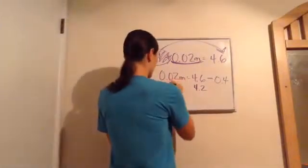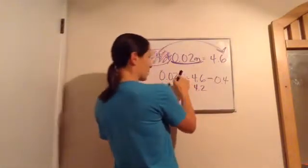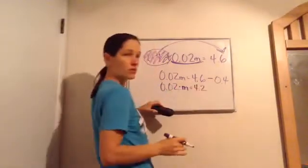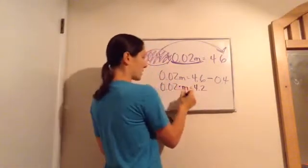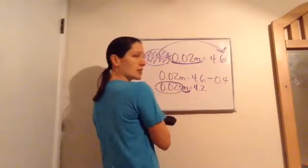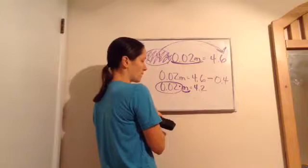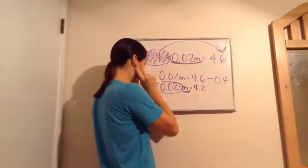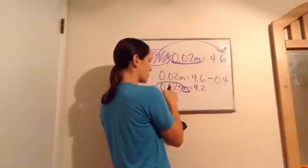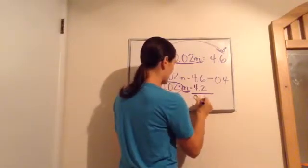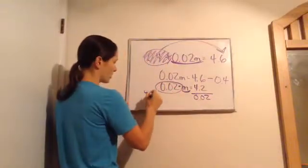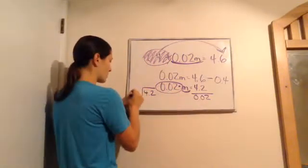Now, it becomes 0.02 times. Remember what that means when a number is next to a letter? Times m equals 4.2. So, now we're trying to get the m by itself. So, this times 0.02 becomes what? The opposite of timesing is dividing. So, this times 0.02 has become divided by 0.02. So, if you were to see that, it would become 4.2 divided by 0.02.